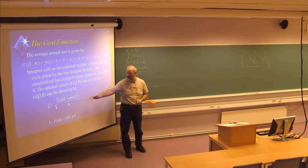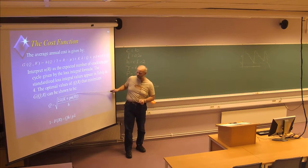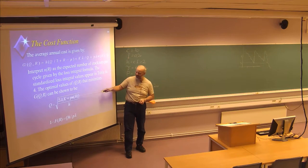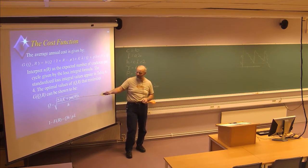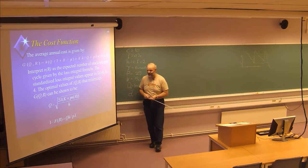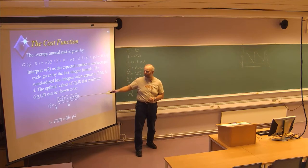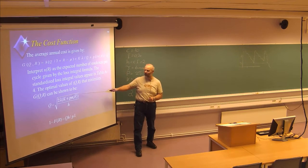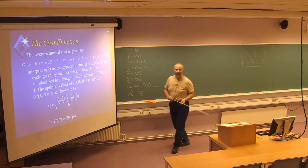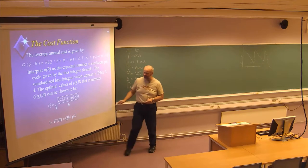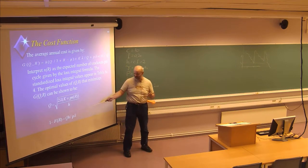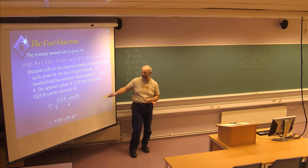The optimal Q is the square root of 2 lambda divided by holding cost, multiplied by the sum of K (ordering cost) plus P times the expected number of shortages N(R). This is similar to the EOQ formula but adds the penalty and expected shortages in the stochastic case. Deriving the cost function with respect to R gives the expression 1 minus F(R), which is actually easier to use than having a direct expression for R.